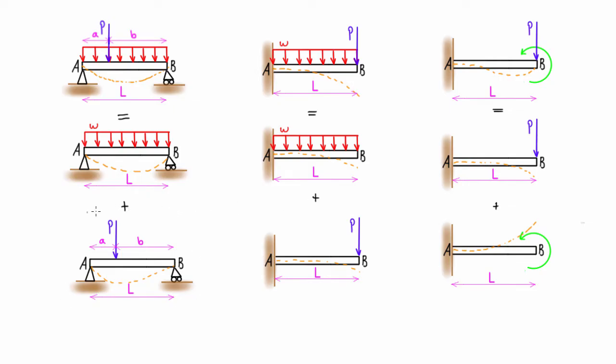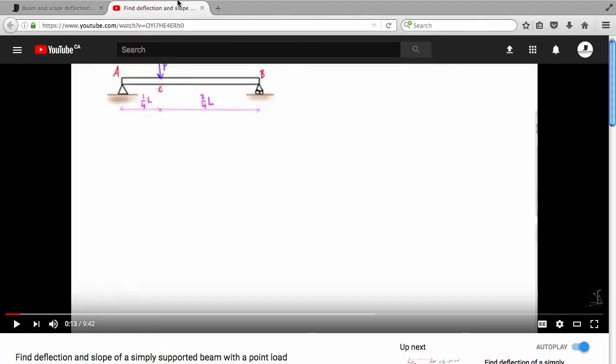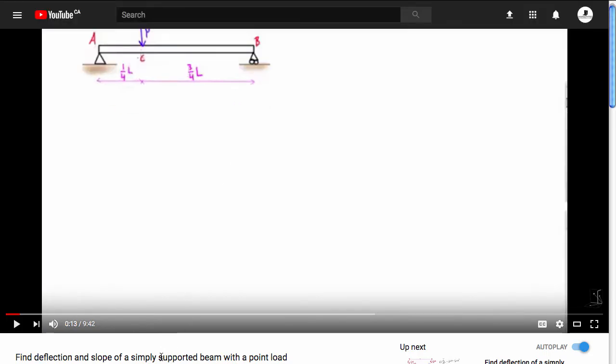Now I want to just focus in on this first problem here. If you guys have been watching my other videos, you may have seen me solve this problem. This was actually the YouTube video that I did solving that exact problem where we have a point load one quarter of the way along this span. It's called 'Find deflection and slope of a simply supported beam at the point load,' and it's almost 10 minutes long. If you're curious, you can find the URL right there or you can just search this by name.